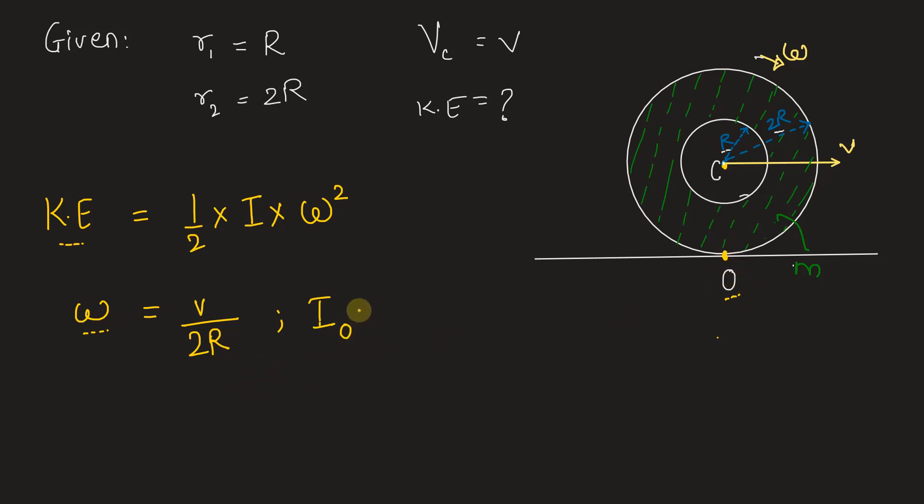So, this IO will be calculated using the parallel axis theorem. When we calculate mass moment of inertia about C, we have IC and we will have to shift it to O using parallel axis theorem.